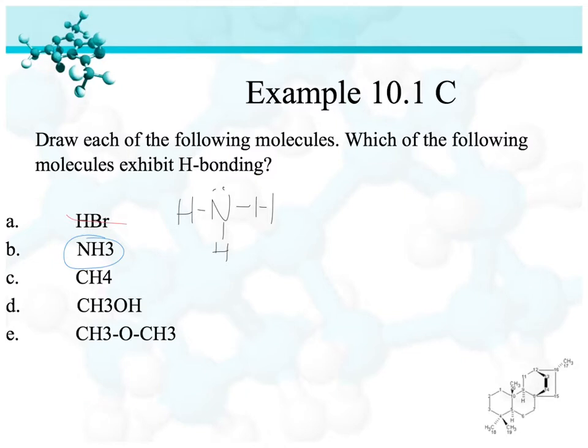And CH4, if we draw that structure, it does not have nitrogen, oxygen, or fluorine. So this one is pretty easy to eliminate as well. Just because it has hydrogen doesn't mean it has hydrogen bonds, because that's not what we call these. We call the nitrogen ones hydrogen-nitrogen bonds. We call these carbon-hydrogen bonds. The hydrogen bonds are the molecules with nitrogen, oxygen, and fluorine connected to other hydrogens.